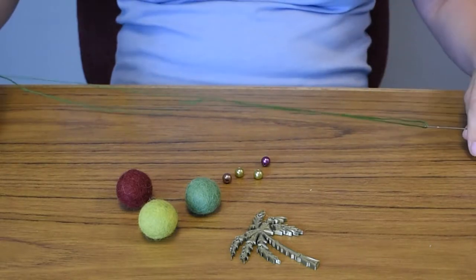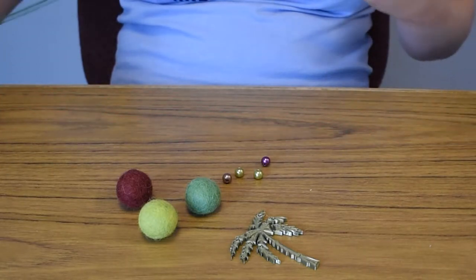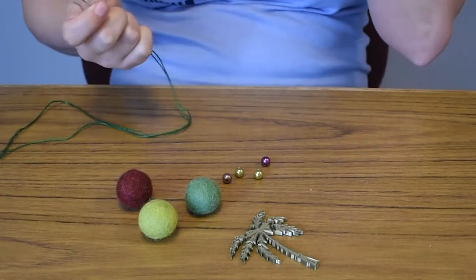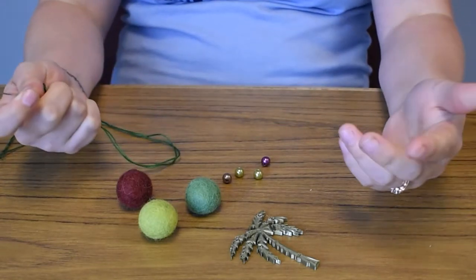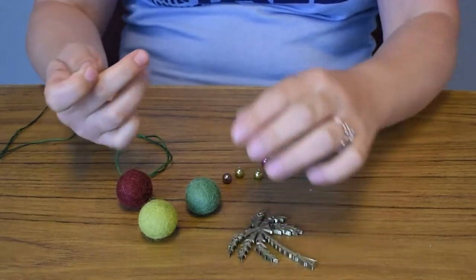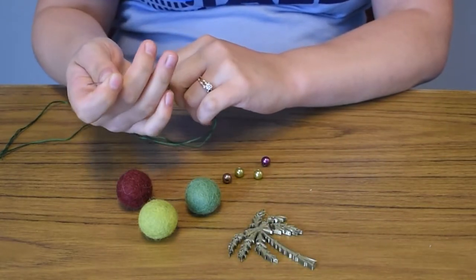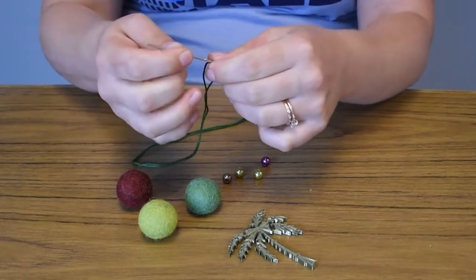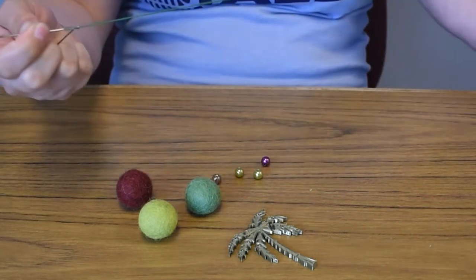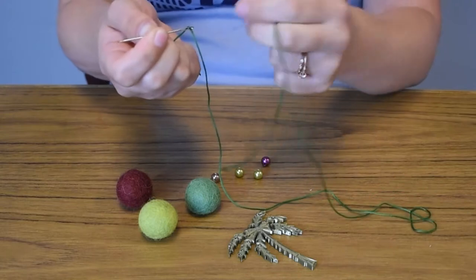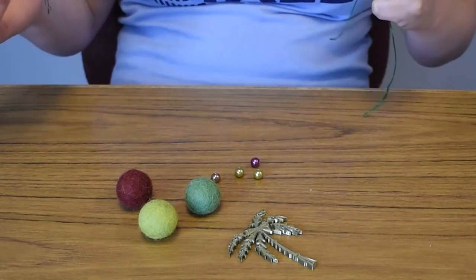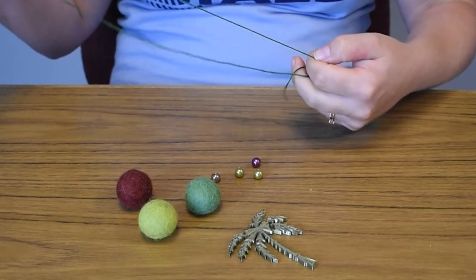So you don't want to cut your string until we are finished. There's a couple different ways that you can do this. You can either keep your thread doubled like this or you can pull it completely through and just tie the end if you want. It is completely up to you, whichever way works.